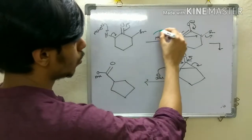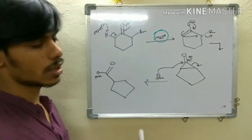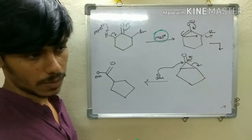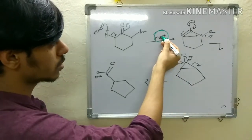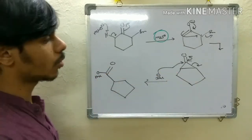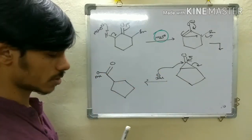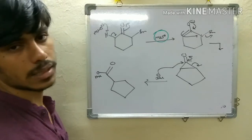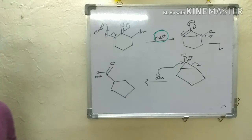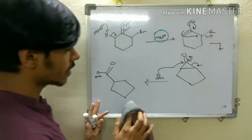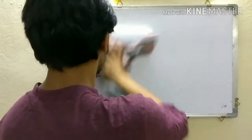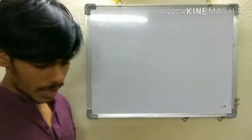Depending on which base you use, you get different products: if you use an alkoxide base you end up with an ester, whereas if you use sodium hydroxide or potassium hydroxide you get a carboxylic acid.